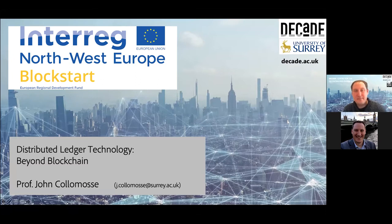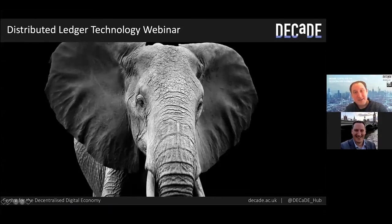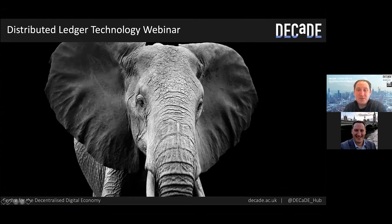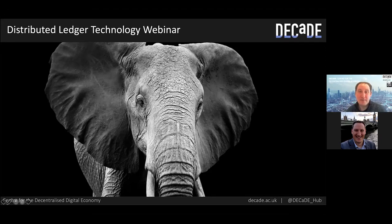Let me start by briefly addressing what might be the elephants in the room. Distributed ledgers and blockchain are an emerging technology, considered by some to be overhyped, with questionable environmental credentials, or somewhat anarchistic due to their decentralised nature or association with unregulated digital commodities like Bitcoin. I'm not here to evangelise about distributed ledgers, and I won't be talking about cryptocurrencies and their economics.